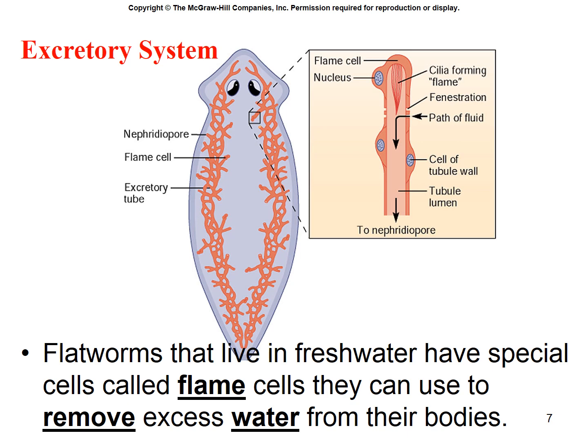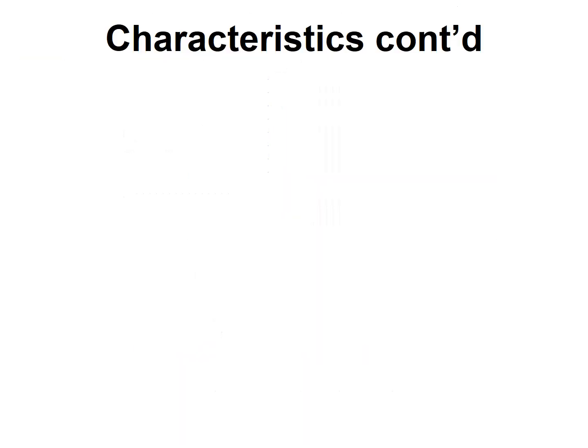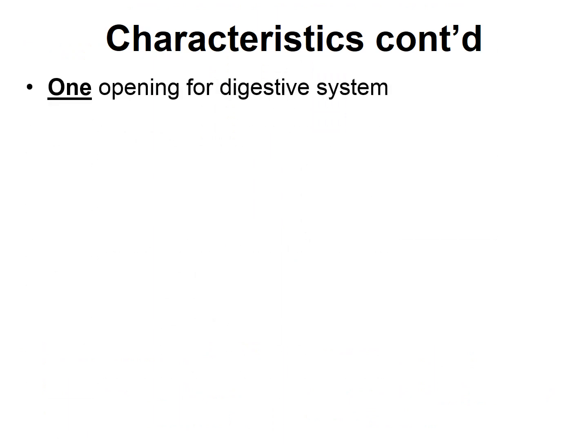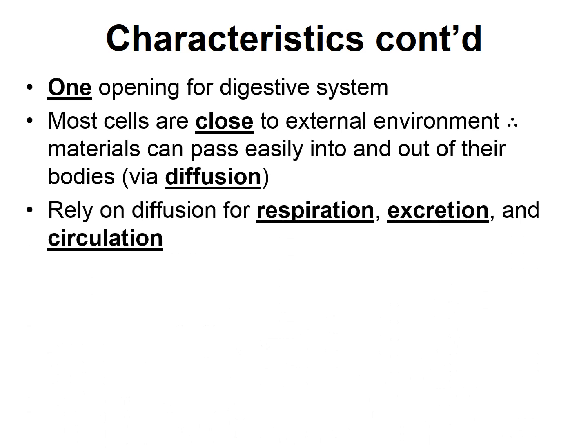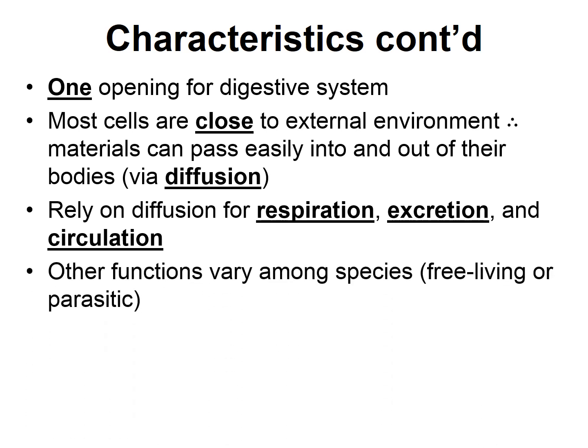They do have an excretory system to get rid of ammonia waste. Since they live in freshwater and don't have kidneys, they have something called flame cells that help remove excess water from their bodies. They have just one opening for their digestive system. Most cells are close to the external environment, so materials can pass easily into and out of their bodies via diffusion. They rely on diffusion for respiration, excretion, and circulation.